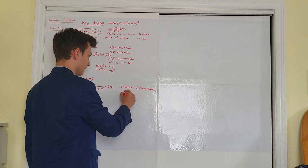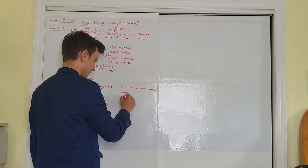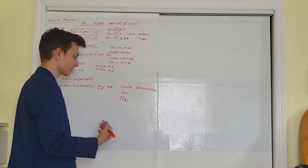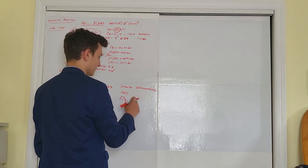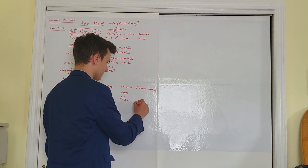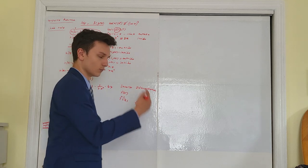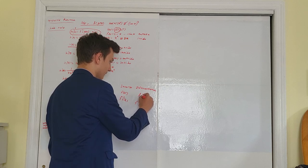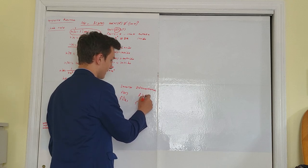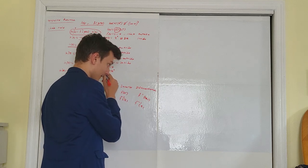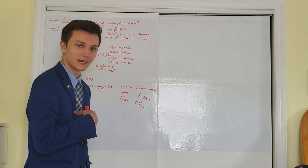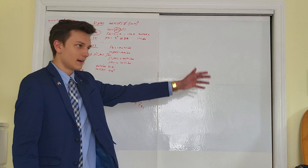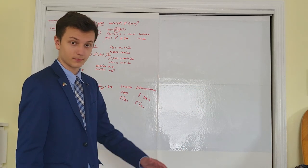Inverse differentiation. Let's say I give you a function f of x. That function has an inverse, f inverse of x. Let's say I'm evaluating the inverse of x at a point — let's call that point a. Inverse differentiation teaches you a method, a simple formula, where you'd be able to find f prime inverse of a — the derivative of the inverse of f of x at a — if you were given f prime of f of a. What this is basically telling you is: if I have a function f of x and I know f prime of x, how can I find the derivative of f inverse of x?